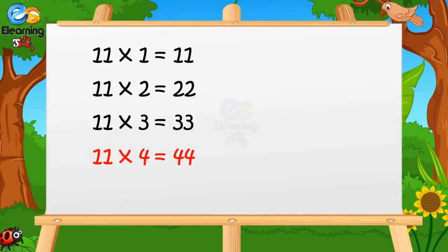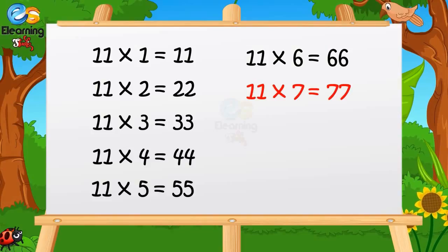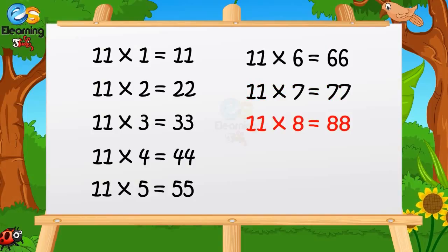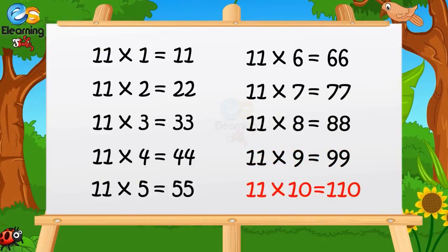11 fives are 55. 11 sixes are 66. 11 sevens are 77. 11 eights are 88. 11 nines are 99. 11 tens are 110.